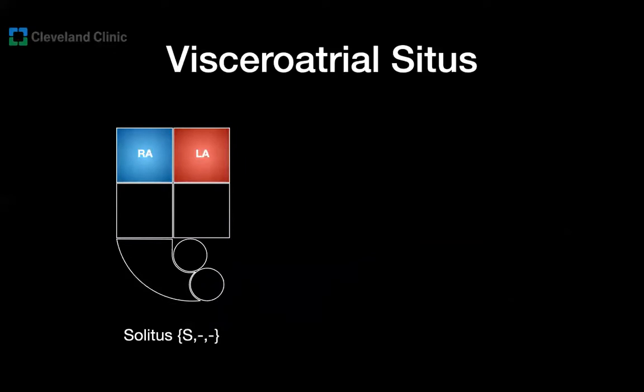Now let's go over each of the letters in the segmental anatomy system. We'll start with the visceral atrial situs, and we have three options. Number one, situs solitus, represented with the letter S — it means that all morphologically right structures are on the right side of the patient, and all morphologically left structures are on the left side, including abdominal and thoracic organs.